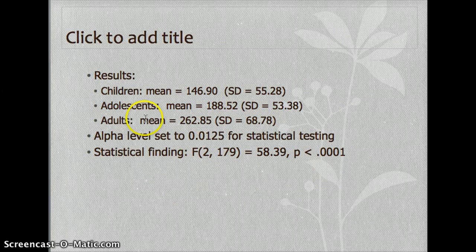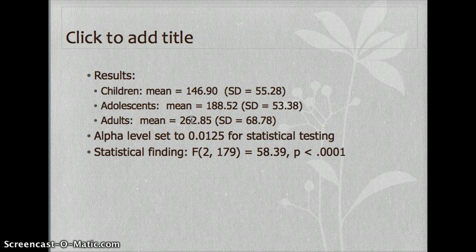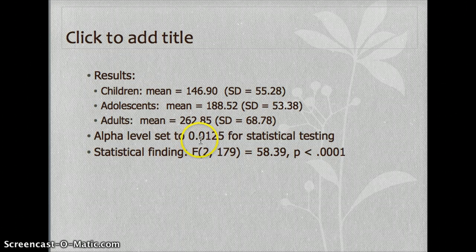Here's what they found. The children's means and standard deviations, the adolescents' means and standard deviations, and the adults' means and standard deviations. They set the alpha level as something equal to or less than 0.0125.